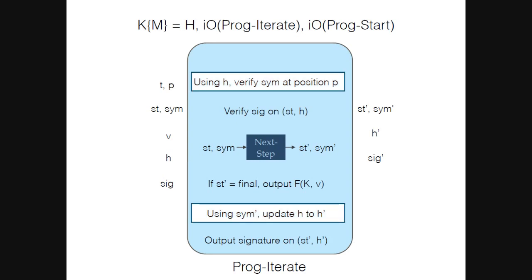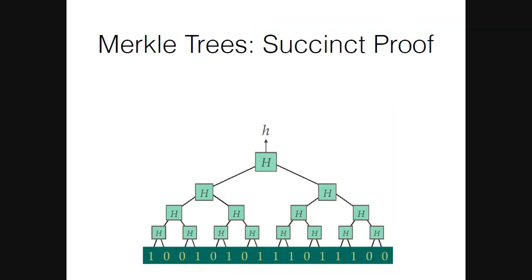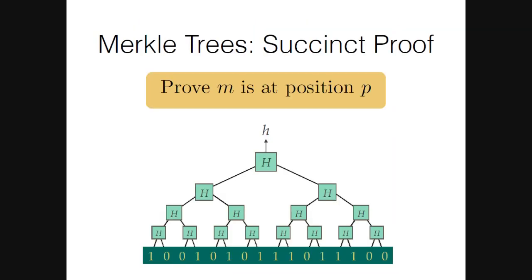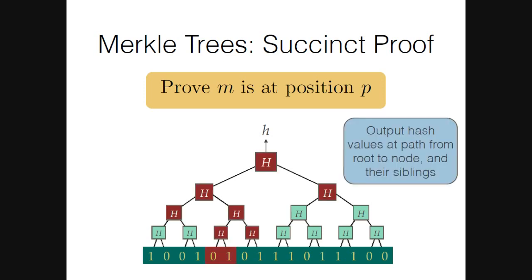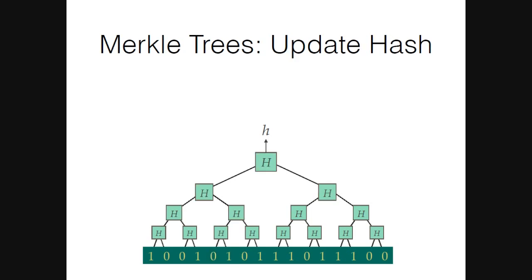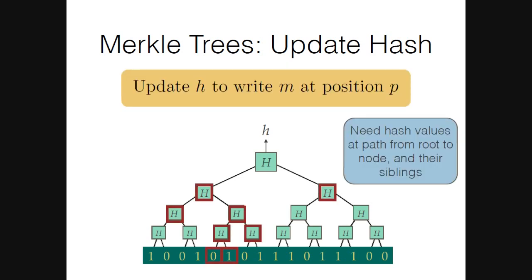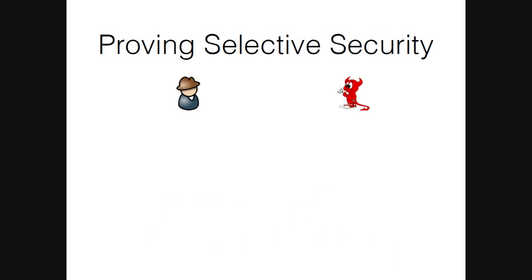Two things remain: how to verify that a symbol is at position p, and how to update the hash efficiently. Both are easy with Merkle trees. To prove a message m is at position p, you only need the hash values from root to the node — a logarithmic number of hash values. Similarly, to update your hash you only need the intermediate hash values from root to the node, again logarithmic. These work for any arbitrary hash function; the specialness comes in the security proof.